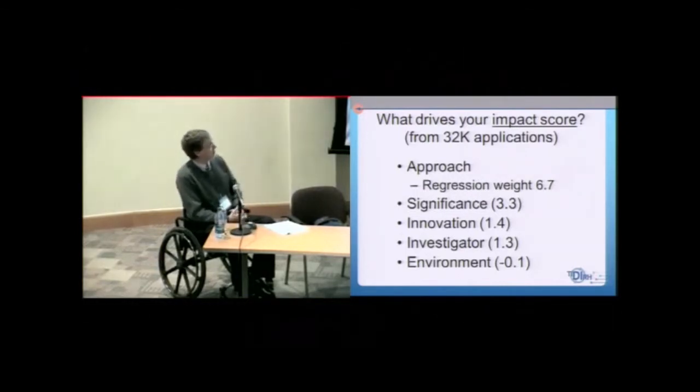What they did after the first 32,000 grants had been reviewed, they went back and they did a regression analysis about which of these five subdomains, so these are the different subdomains where you're getting scored in your application, which of these subdomains are really predicting whether you're getting funded or not. And so, what does this tell you where you want to put your emphasis? It's on the approach. And so, the approach gets weighted almost sevenfold, significance three, then innovation, investigator, and environment, a little bit of a negative correlation.